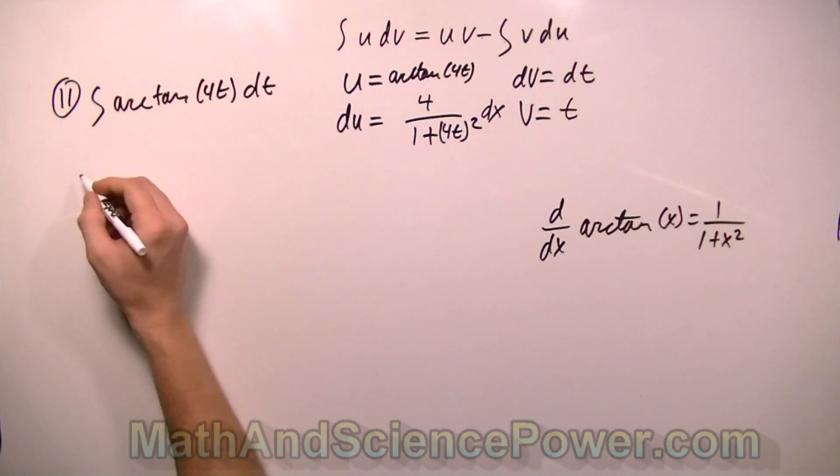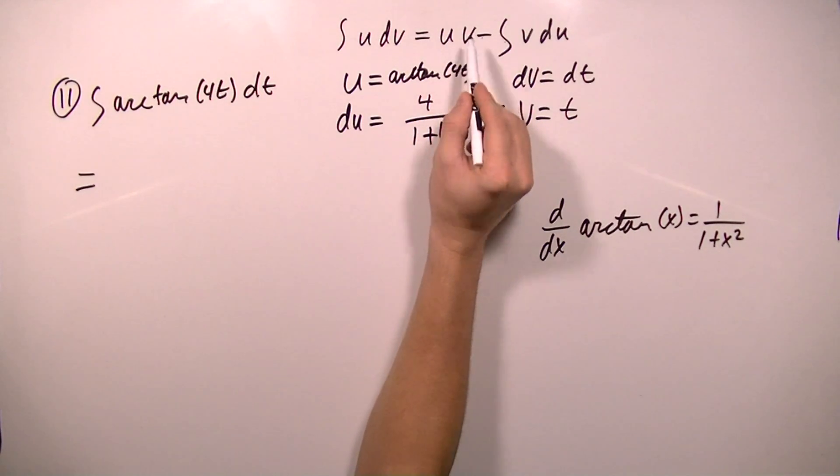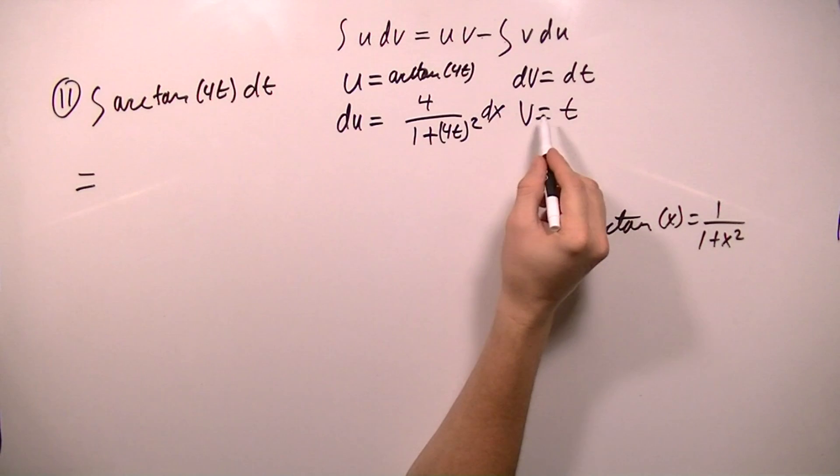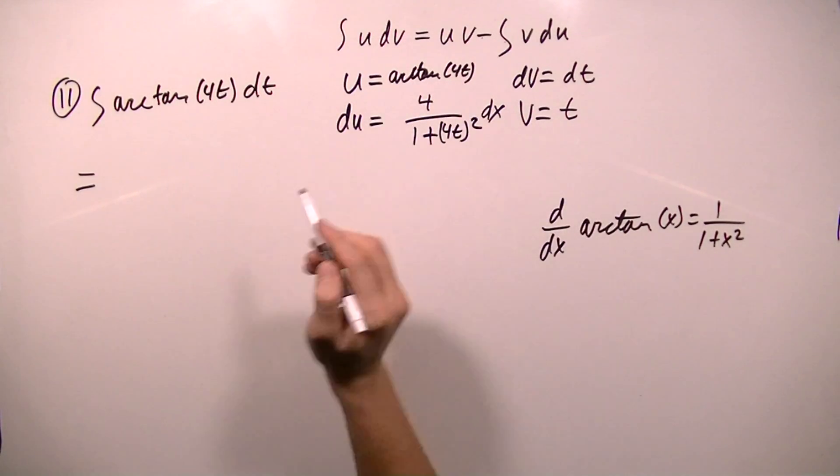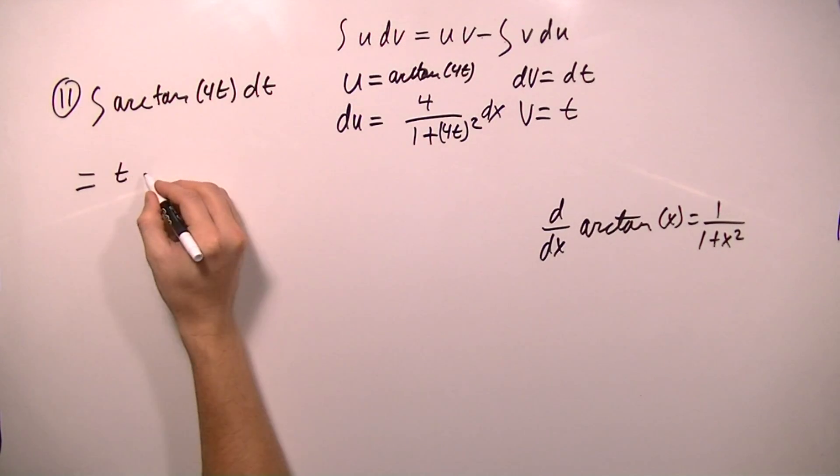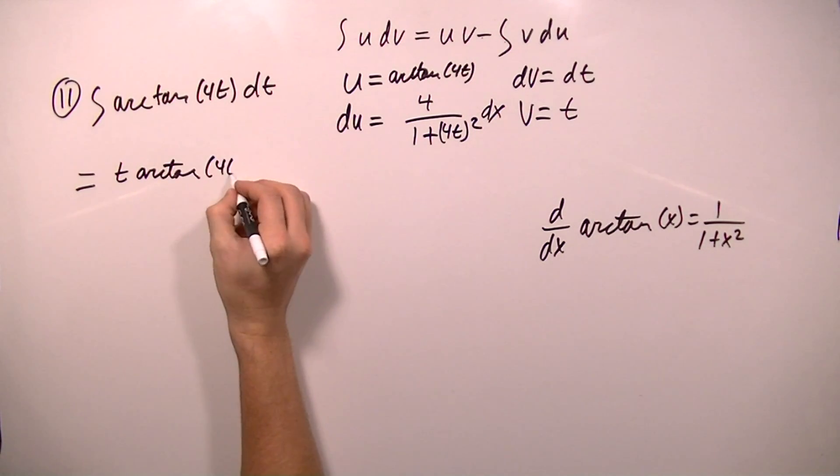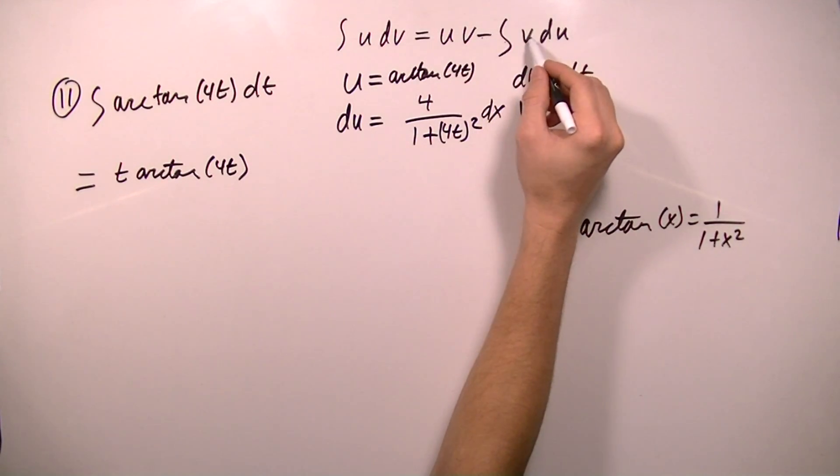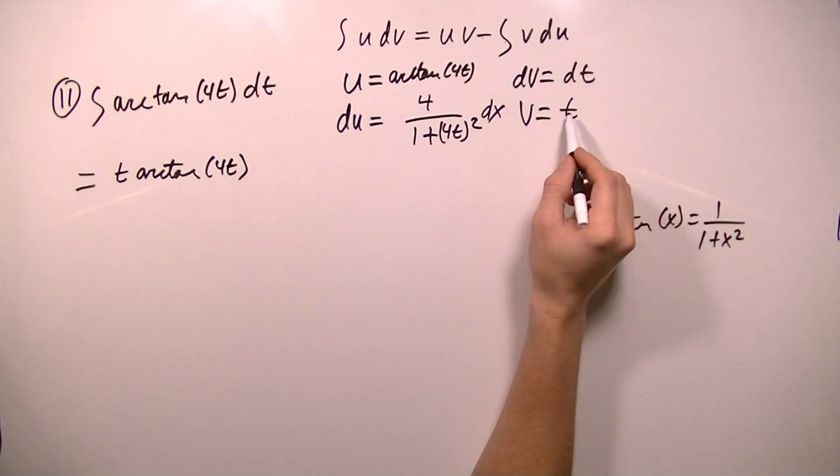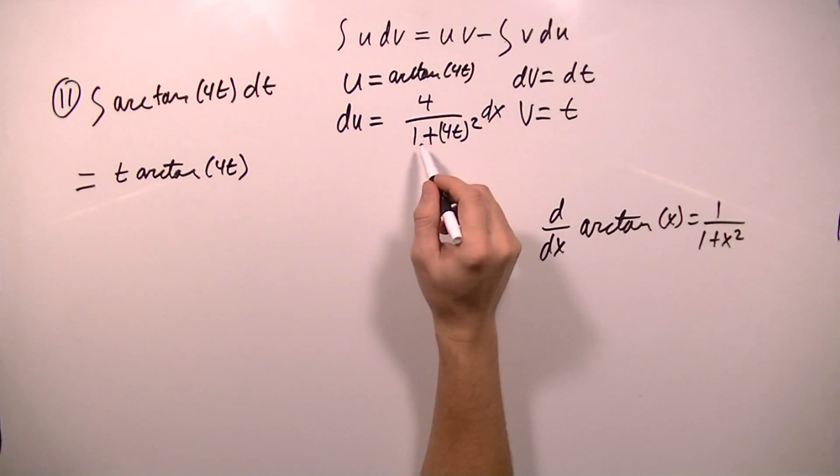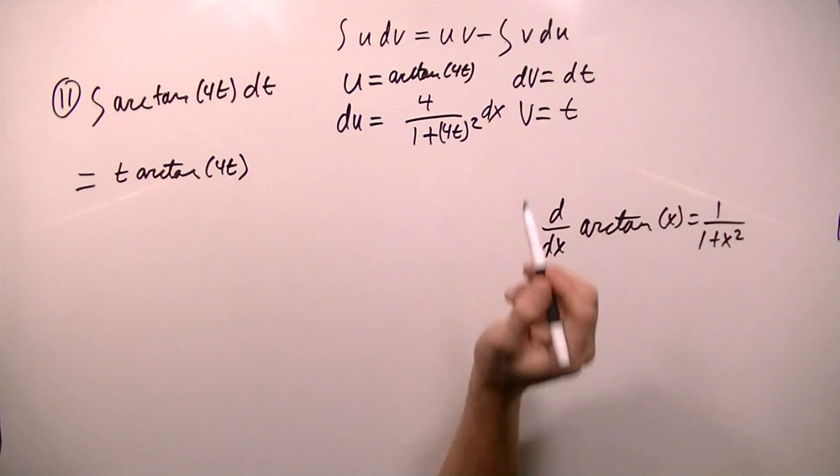Okay, let's plug in our values into our formula. So this integral will equal, and I'm going to start with u times v. So v is t and u is arctan 4t. So I'm going to have t arctan 4t. And then I'm going to subtract the integral of v du. So v is t and du is 4 over 1 plus 4t squared dx.